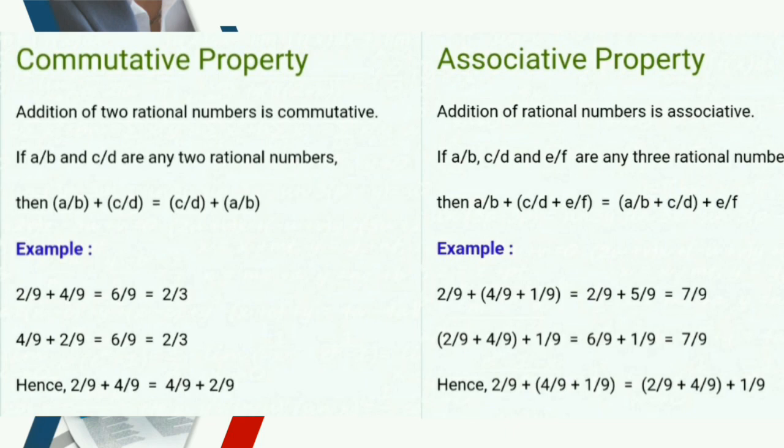For example, 2 upon 9, 4 upon 9, and 1 upon 9. We can add the last two first: 4 upon 9 plus 1 upon 9 equals 5 upon 9. Then add the first: 2 upon 9 plus 5 upon 9 equals 7 upon 9. Or we can add the first two: 2 upon 9 plus 4 upon 9 equals 6 upon 9, then add 1 upon 9 to get 7 upon 9. Either way, the sum is the same.